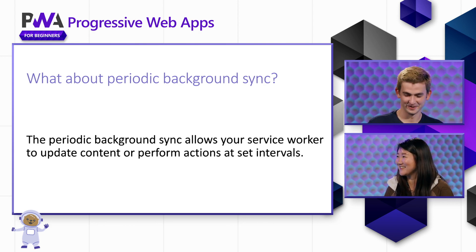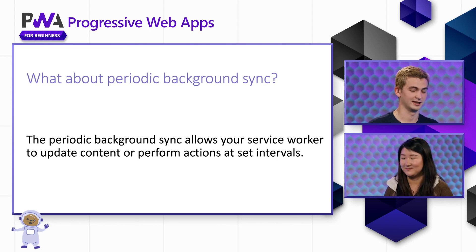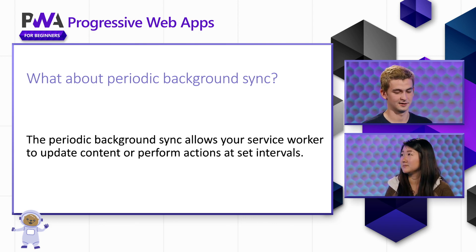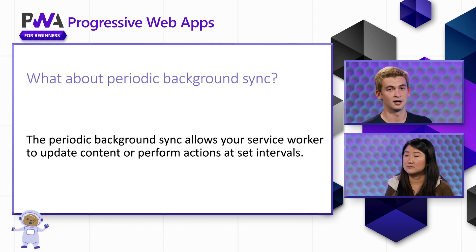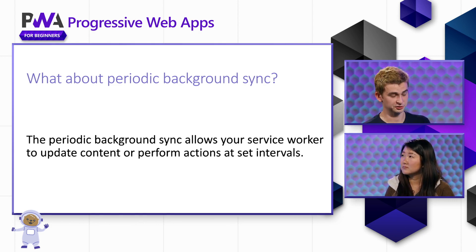Periodic background sync is another great way to keep our application prepared for offline scenarios. We can use this API to periodically update our app in the background — update assets or run code that we don't want to run while the user is actively using the app. We can use this to keep our content fresh and ready to go for the users, increasing the overall quality of their experience, speeding it up, and just making sure everything's always ready to go.